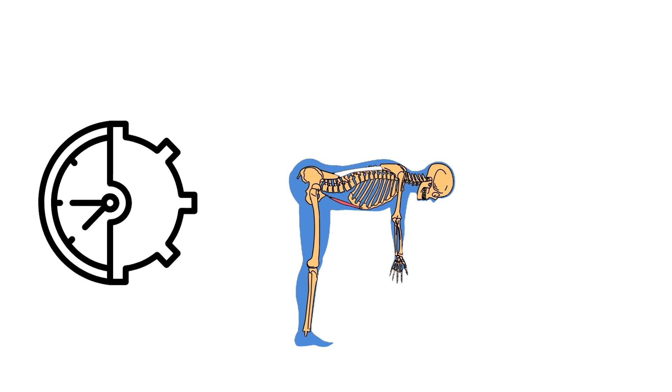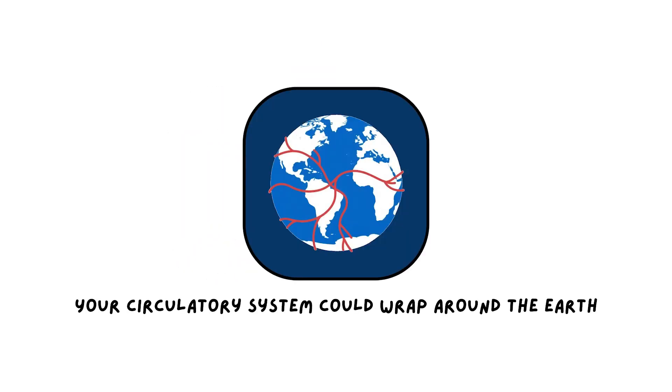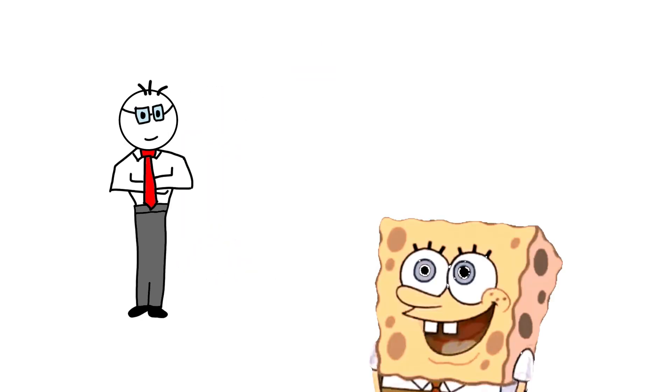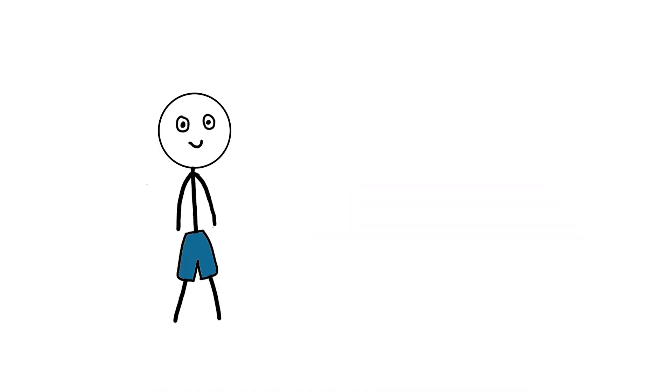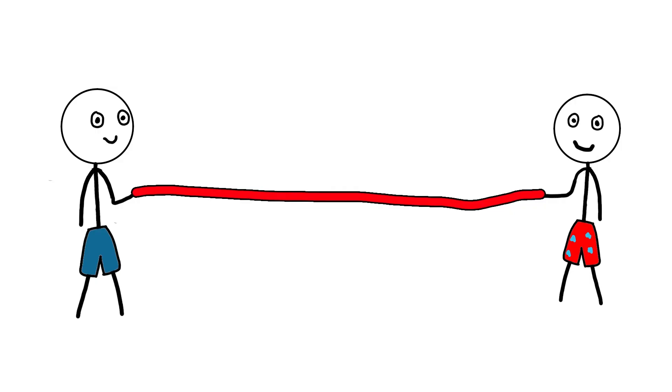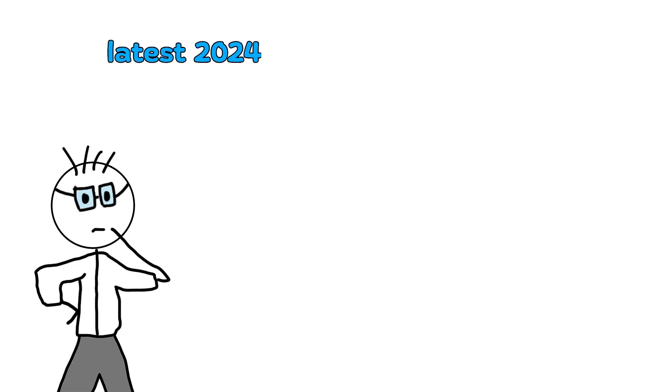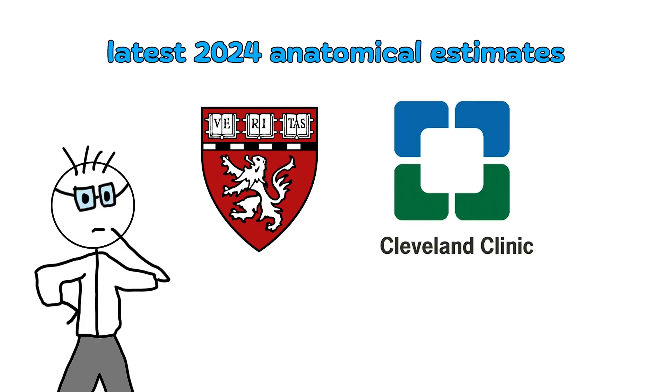Your circulatory system could wrap around the Earth. Here's one that stretches the imagination, quite literally. If you took all your blood vessels, every artery, vein, and capillary, and lined them up end to end, the total length would be around 96,000 kilometers, about 60,000 miles. That's according to the latest 2024 anatomical estimates from Harvard Medical School and the Cleveland Clinic, slightly lower than the old 100,000 kilometer figure, but still mind-bending.